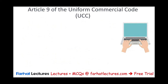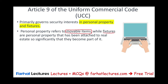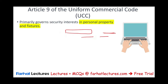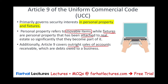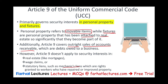Article 9 of the Uniform Commercial Code primarily governs security interests in personal property and fixtures. Personal property refers to movable items. Fixtures are personal property attached to real estate so significantly they become part of it — for example, a built-in bookshelf. Article 9 also covers outright sales of accounts receivable. Article 9 does not apply to security interests in real estate like mortgages, wages or wage claims, or statutory liens such as mechanic's liens, which are rights granted to workers who have repaired or improved property.